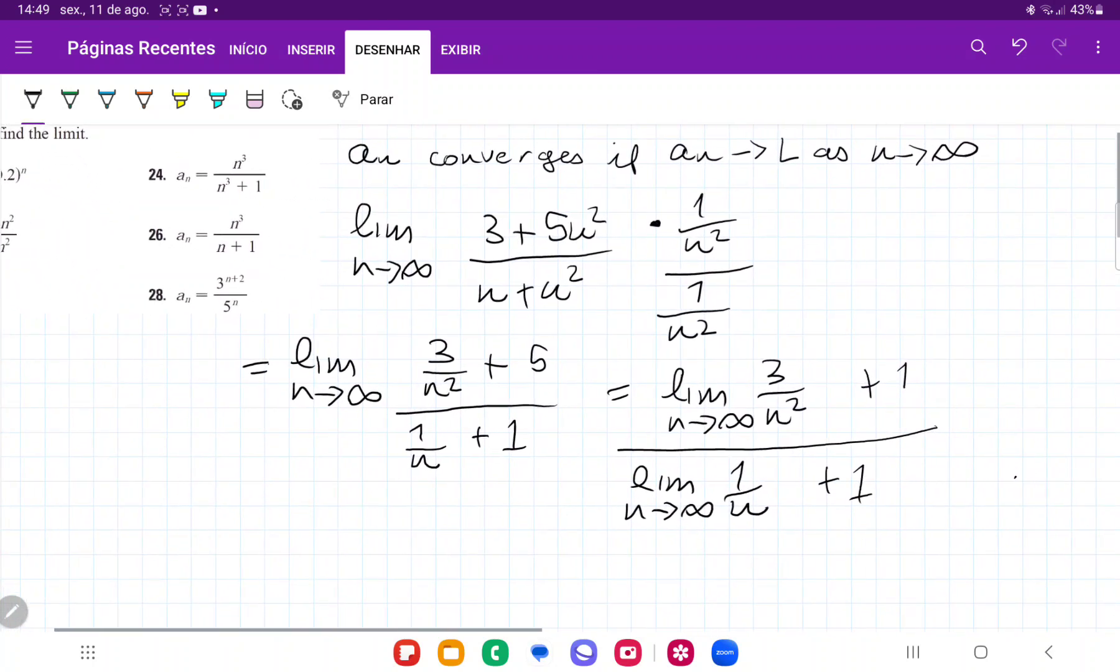And so we can see here that 3 divided by a very large number, that's just going to go to 0 plus 1 over 1 divided by a very large number, so that's just going to go to 0 plus 1.